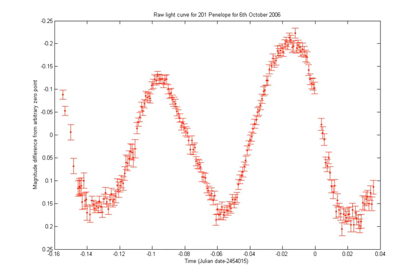For eclipsing variables, the shape of the light curve indicates the degree of totality, the relative sizes of the stars, and their relative surface brightnesses. It may also show the eccentricity of the orbit and distortions in the shape of the two stars.